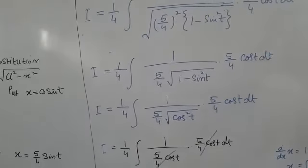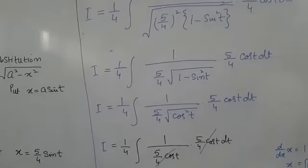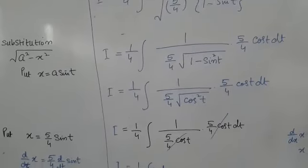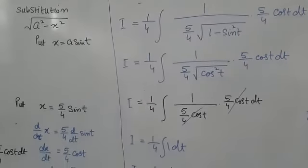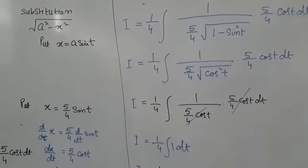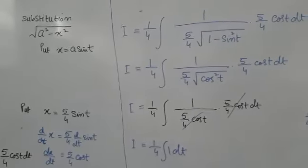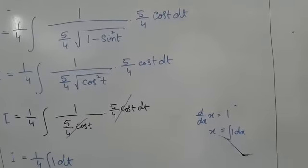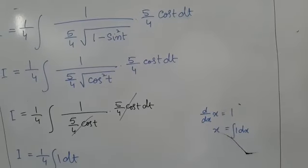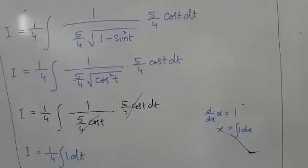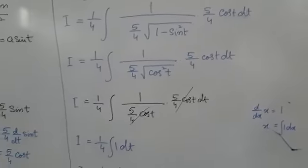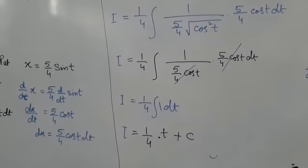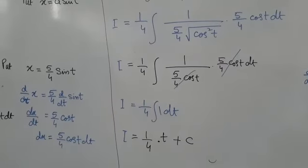Under the square root, we get (5/4)·cos(t). Substituting, the (5/4)·cos(t) in the numerator and denominator cancel, leaving i = (1/4)·∫1 dt. The integral of 1 dt is simply t.